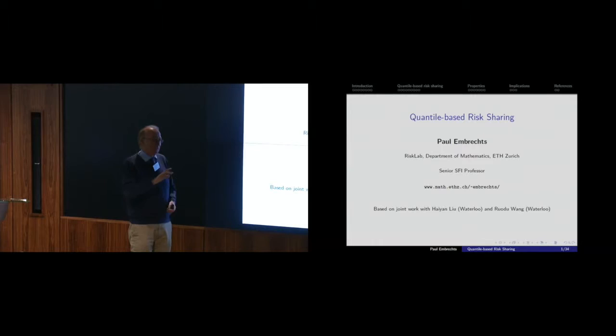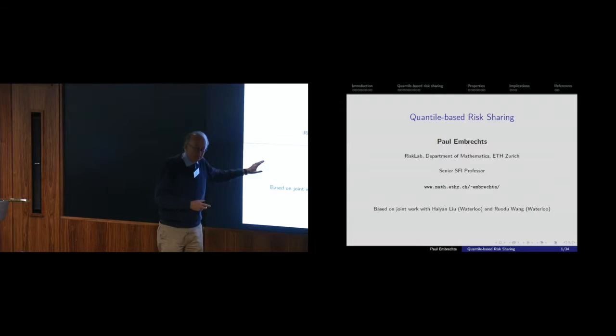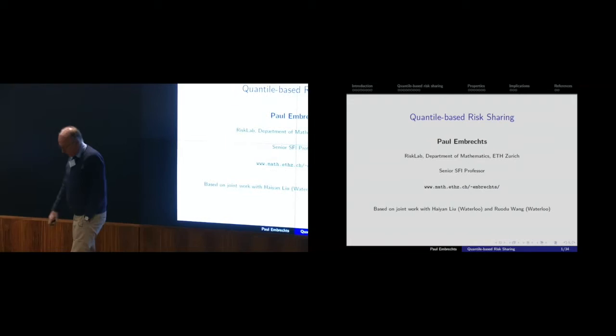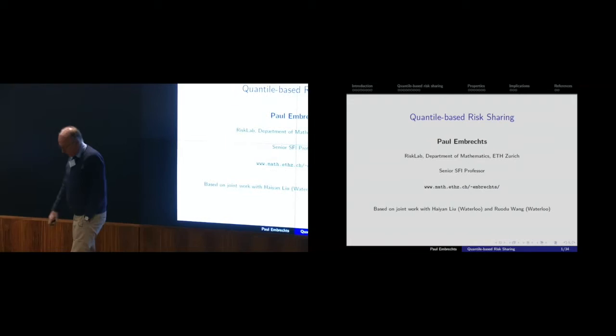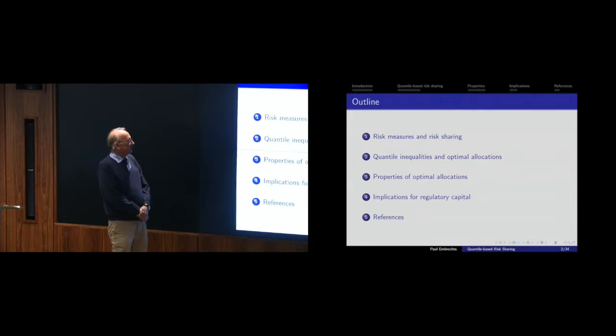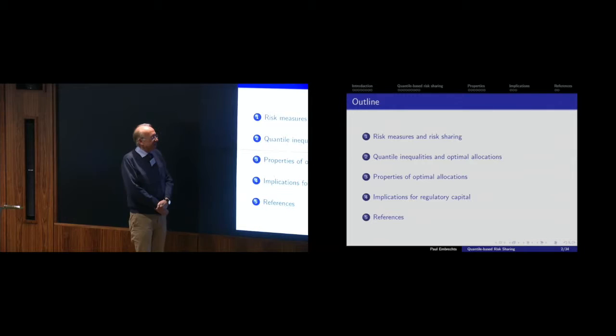The question I want to ask and discuss is: what are the implications of that? This is not a talk where I prove results for an interesting risk measure in isolation. It's more about the fact that these risk measures co-exist. This is joint work with Haiyan Li from Waterloo and Rudolf Wang from Waterloo. I've had various papers with Rudolf, who is a very fine scholar.